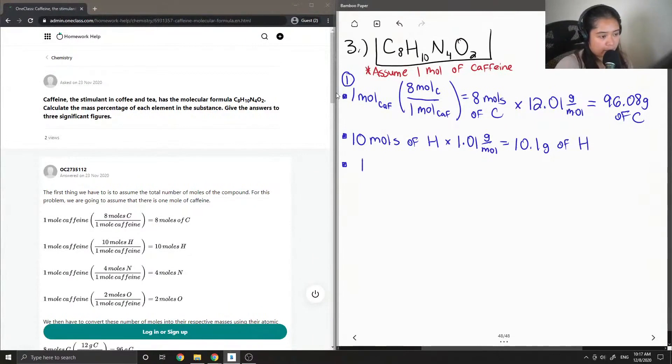Next let's move on to nitrogen. 4 moles of nitrogen in 1 mole of caffeine, multiplied by the atomic mass of nitrogen, which is 14.01 grams per mole, so we end up getting 56.04 grams of nitrogen. And then lastly, there are 2 moles of oxygen in 1 mole of caffeine. Oxygen's atomic mass is around 15.99, so if we multiply it, we end up getting 32 grams of oxygen.